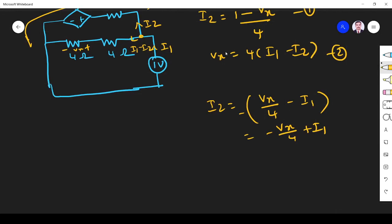Substitute this equation here. So instead of I2 I substitute minus Vx by 4 plus I1. That is equal to 1 by 4 minus Vx by 4. This is equation 3.